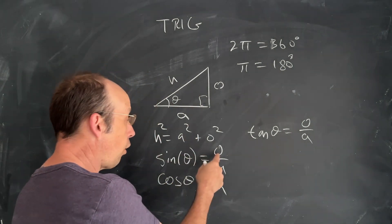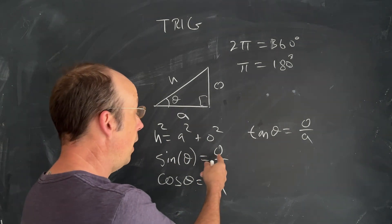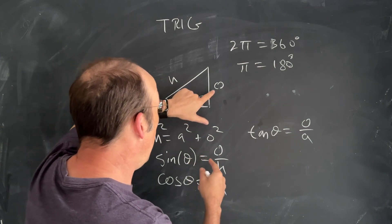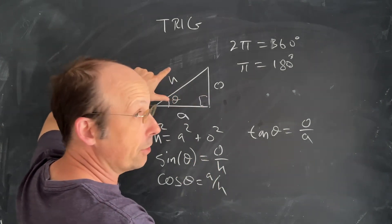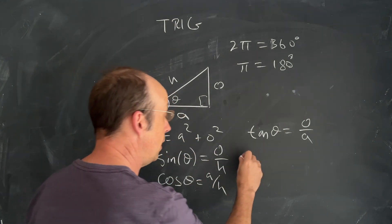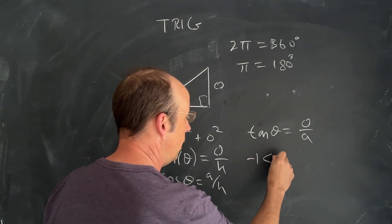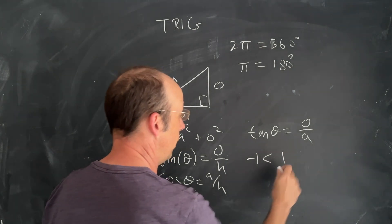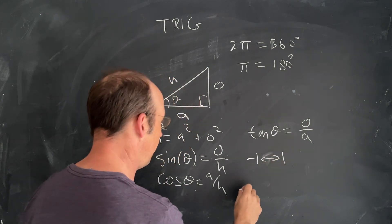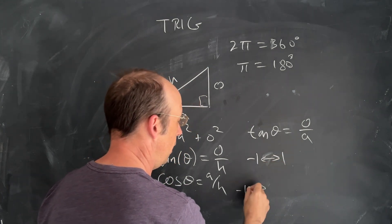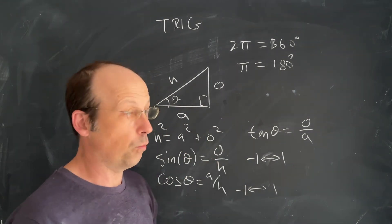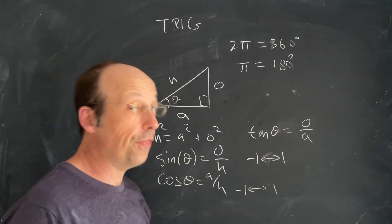These are ratios of sides, so the opposite side can't be greater than the hypotenuse. That means sine — opposite over hypotenuse — has to be a number between negative 1 and 1. The same goes for cosine: negative 1 to 1. You cannot have the cosine of an angle give you something greater than 1 or less than negative 1.